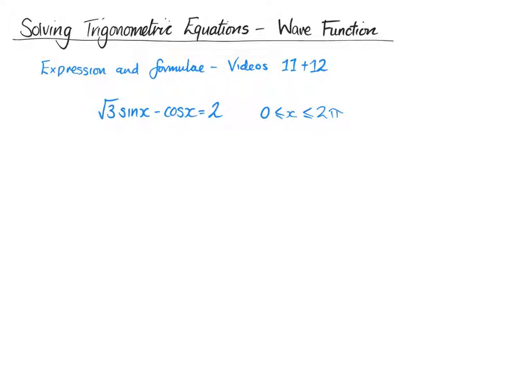Right, so when we're solving this, how do we know it's a wave function question? First, we've got sin x and we have cos x. There's nothing there that we can substitute in. It's not sin 2x or cos 2x or anything like that. So we can't just go in and sort it that way. So the way we're going to have to sort it is using the wave function.